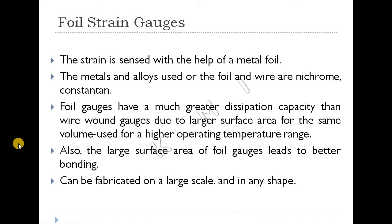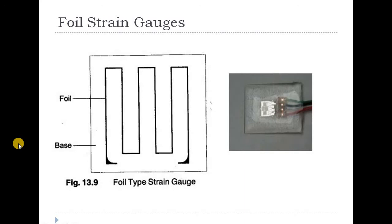The large surface area of foil gauges leads to better bonding. If you require higher operating temperatures, you can use foil strain gauges with metal foils. The structure uses both wires and foils. Wire strain gauges use the full length of the wire; the gauge is attached and bonded to a base in the background.